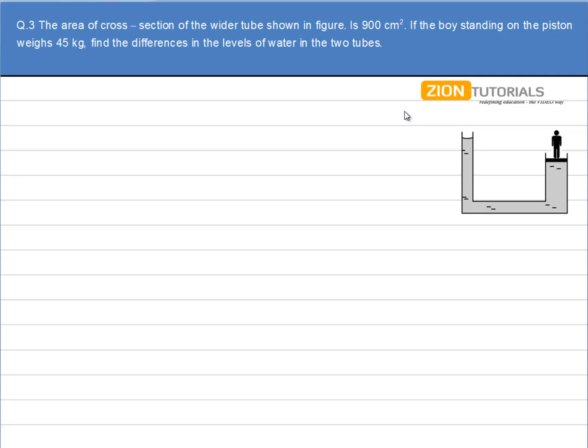The area of cross-section of the wider tube shown in the figure is 900 cm². If the boy standing on the piston weighs 45 kg, find the difference in the level of water in the two tubes.